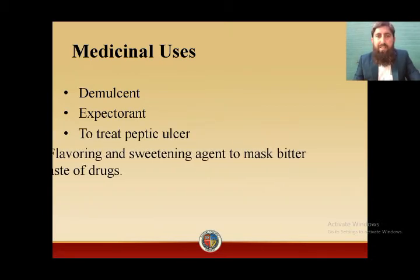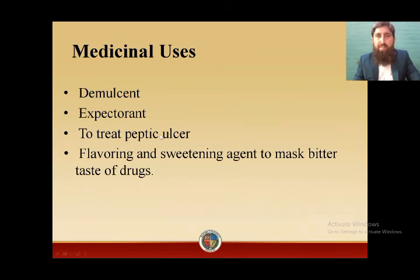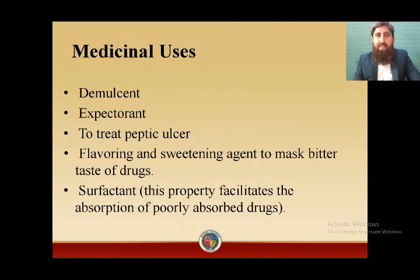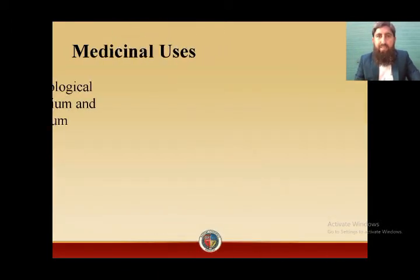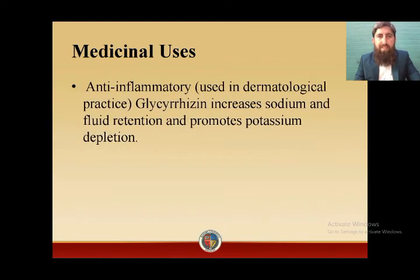Glycyrrhiza glabra is also used to treat peptic ulcer. Because it is sweet, it is used as a flavoring and sweetening agent to mask the bitter taste of other drugs. It is also used as a surfactant, and this property facilitates the absorption of poorly absorbed drugs. Other uses include anti-inflammatory applications, particularly in dermatological practices.